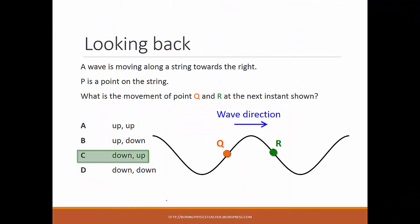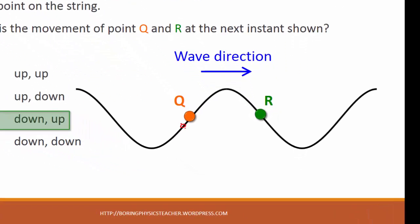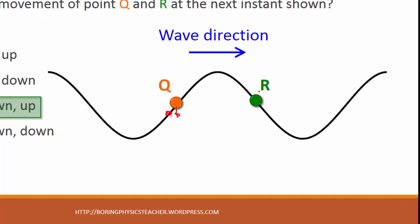Looking back at the original question: with wave direction towards the right, Q moves down because its immediate left neighbor is below it, and R moves up because its left neighbor is above it. So the answer is Q down, R up.